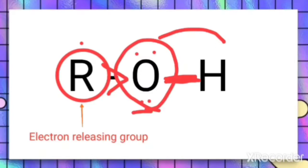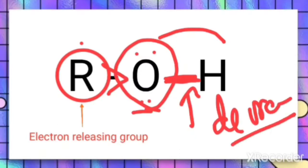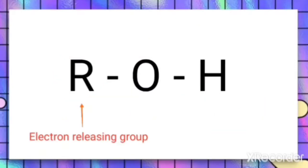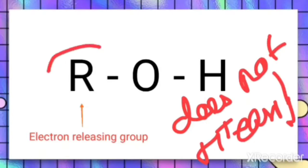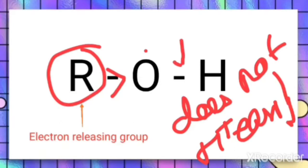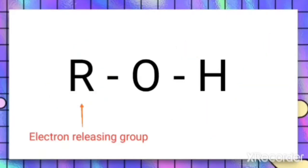Since oxygen is already electron-rich because of R, there is less tendency for oxygen to attract the shared pair of electrons towards itself. This means the polarity of the O-H bond decreases. Since the polarity of the bond decreases, the cleavage will not take place easily, so alcohol does not give H+ ions easily because of the electron-releasing alkyl group.